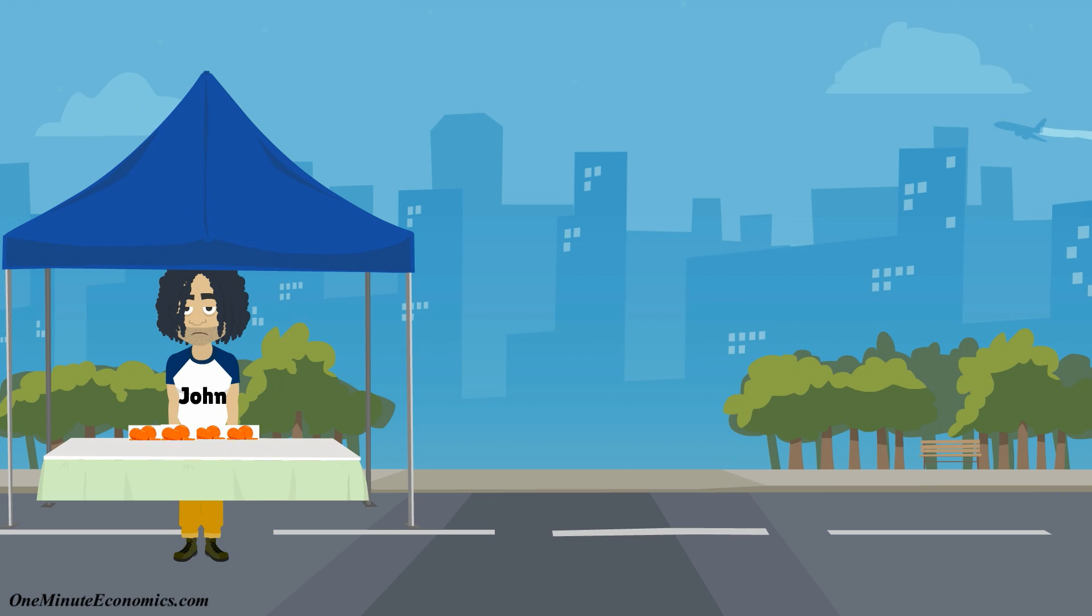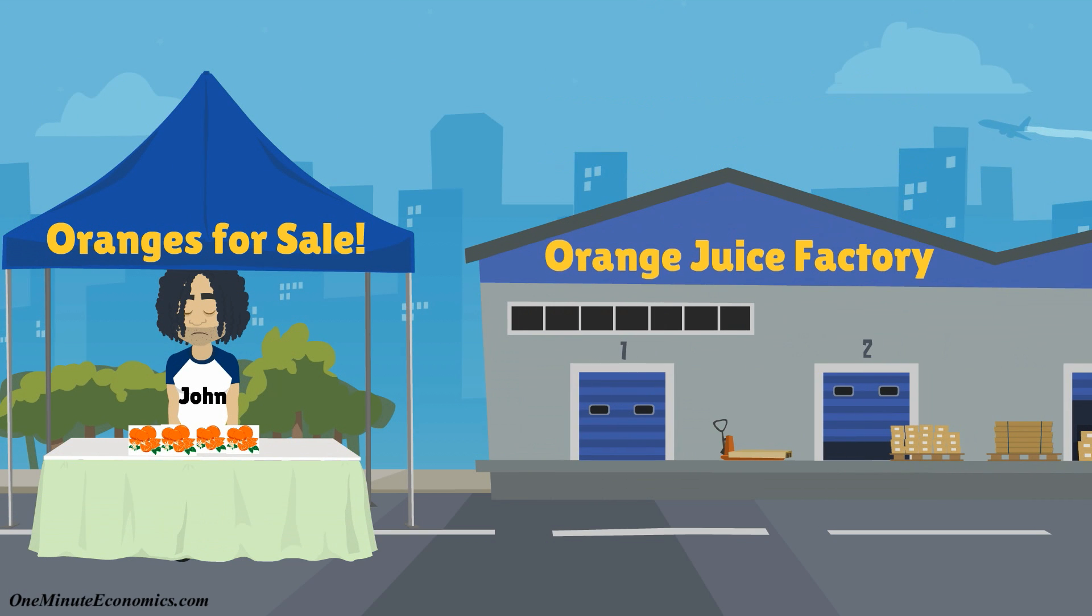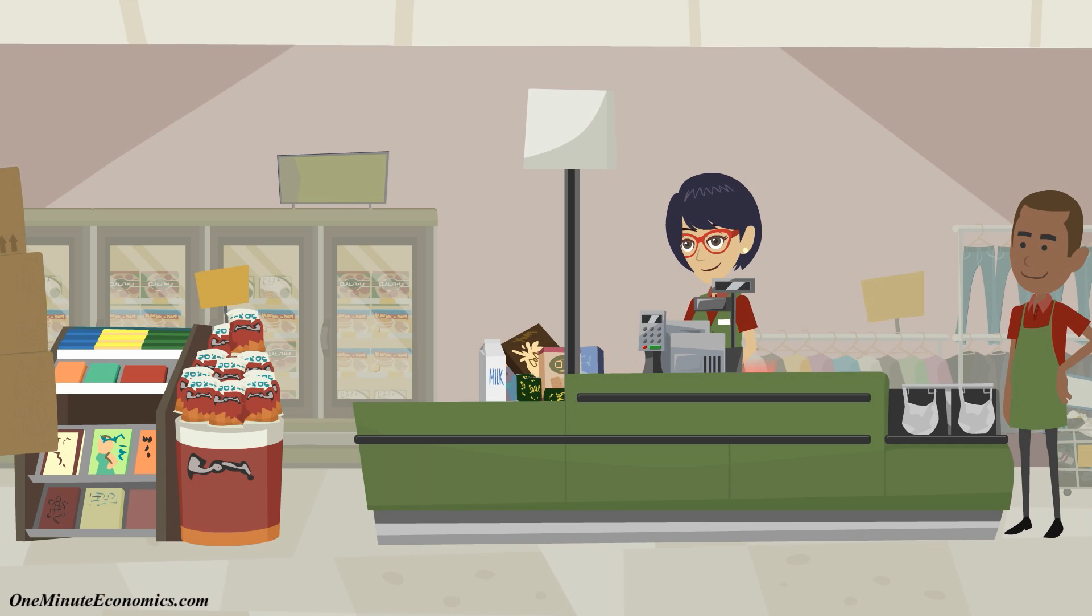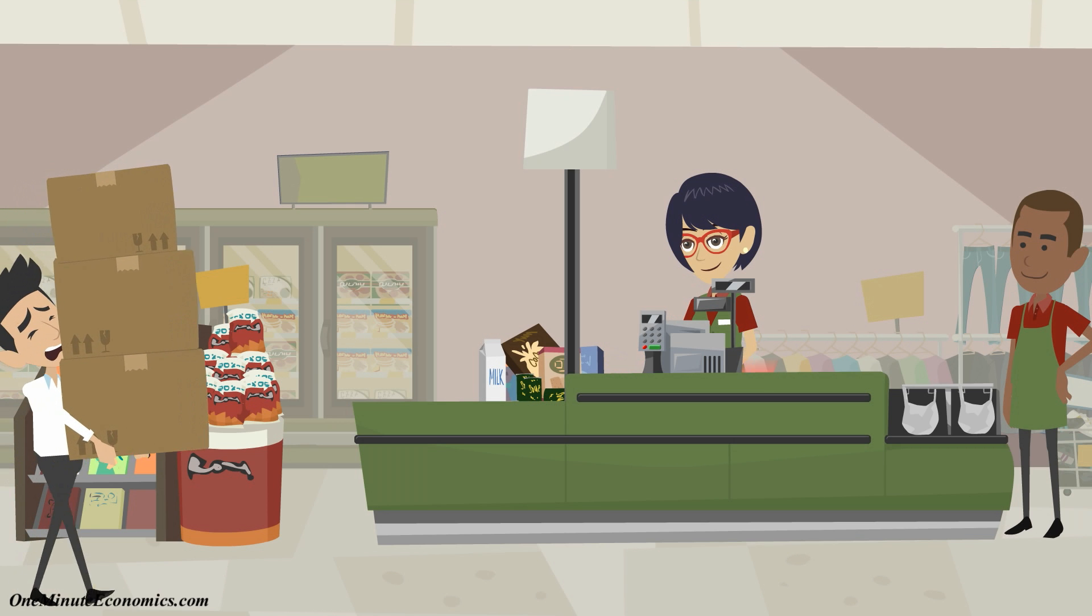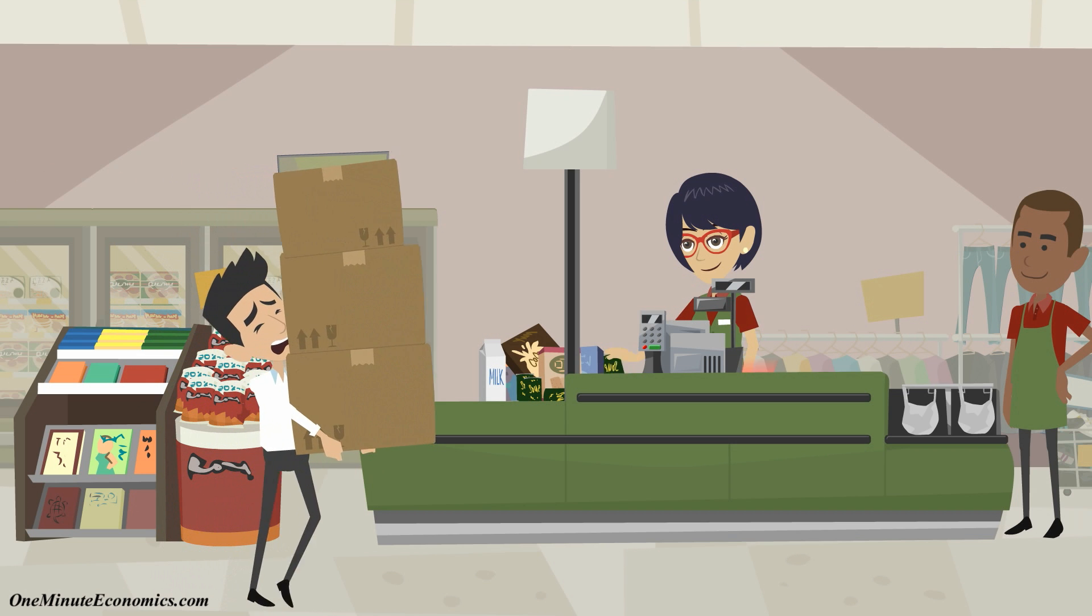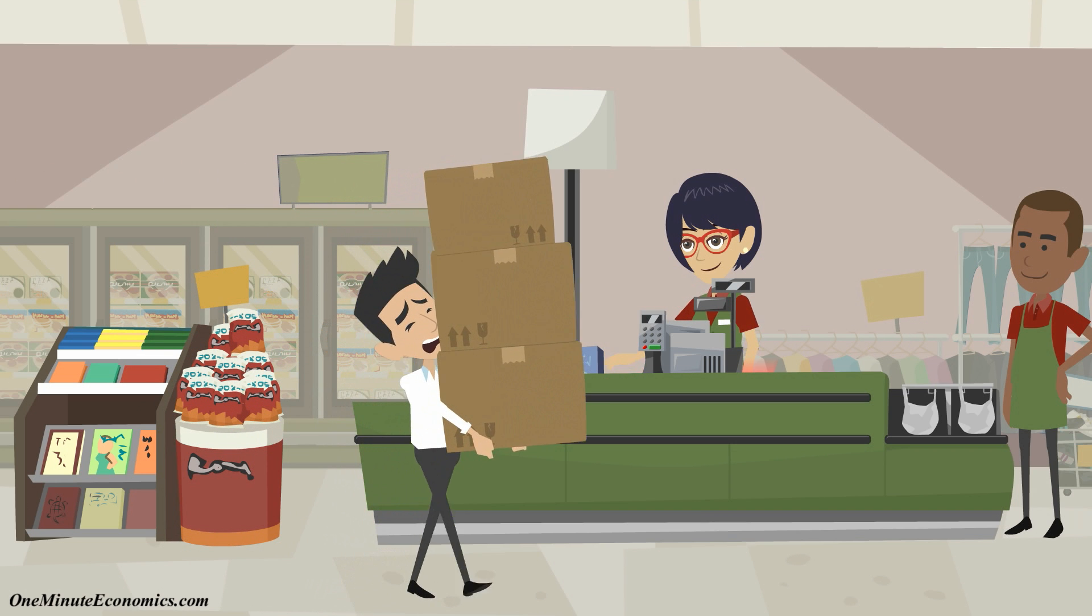Let's assume John sells oranges to George, who produces orange juice. A regular sale would involve George simply buying 500 pounds of oranges at the current market price of, let's say, $1 per pound today.